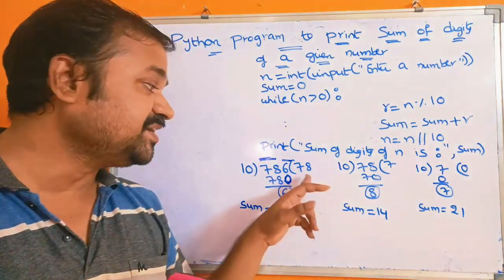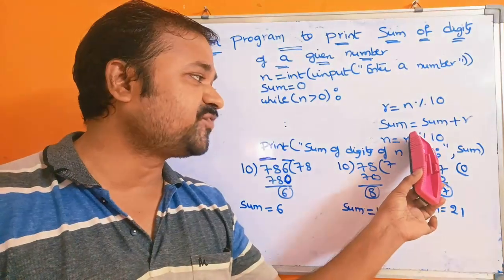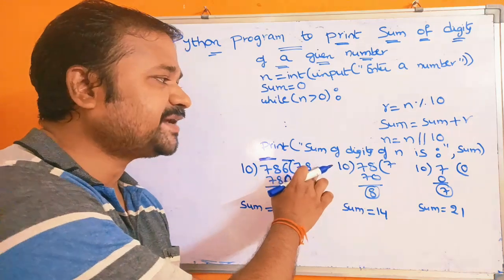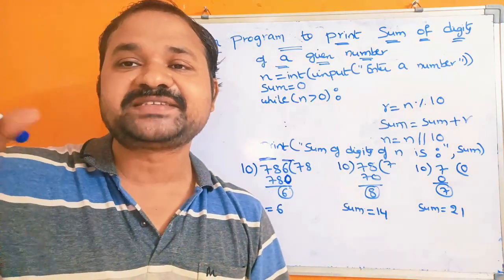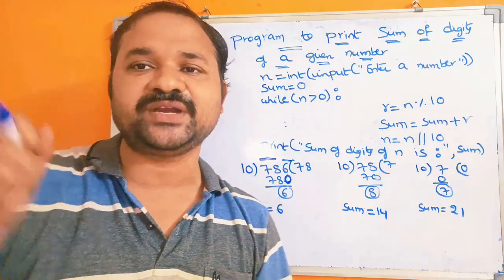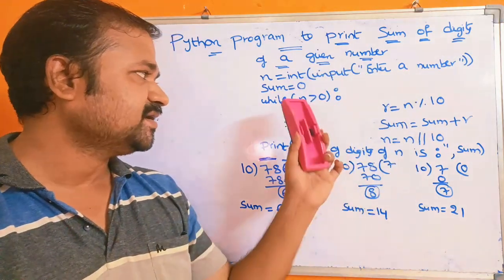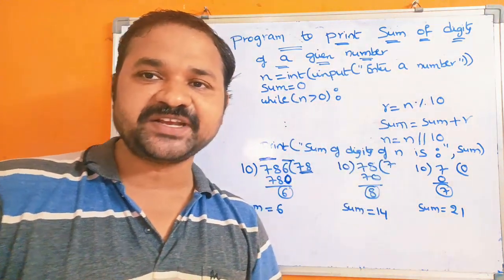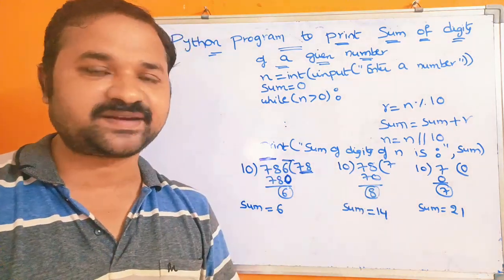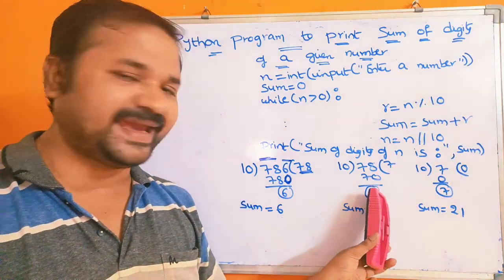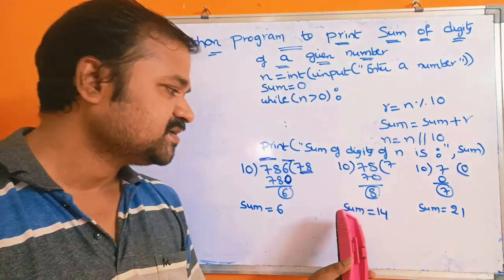In the next iteration we have to perform the operation on 78, so we perform n is equal to n // 10. Floor division gives us only the integer value — 786 // 10 gives 78.6, but integer division yields 78. So now n is 78. In the next iteration, 78 is greater than 0, condition is true. The remainder of 78 modulo 10 is 8, so r is 8. Sum is equal to sum plus r: 6 plus 8 equals 14. Now sum is 14.